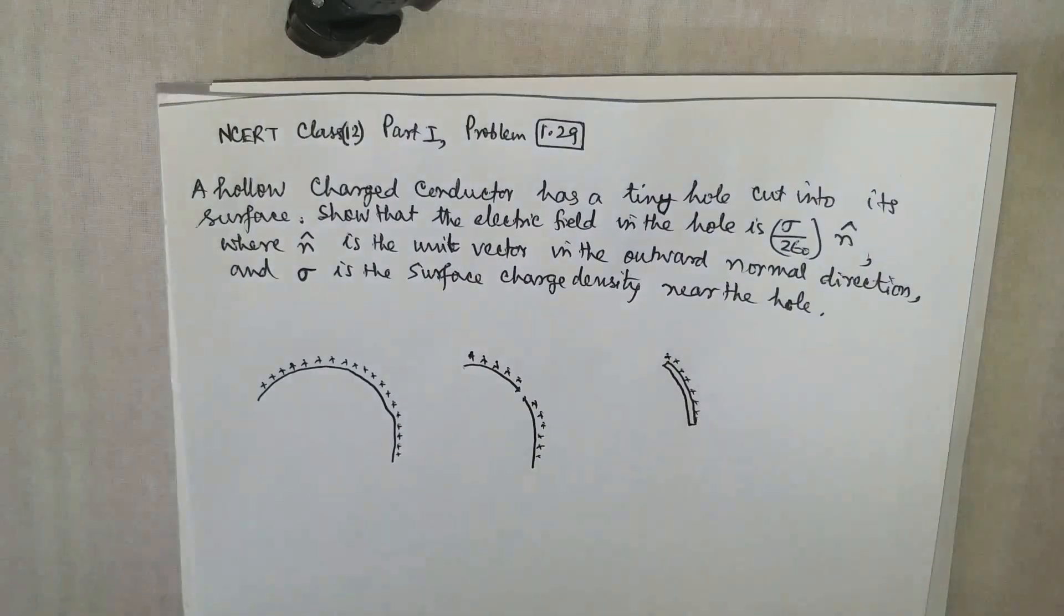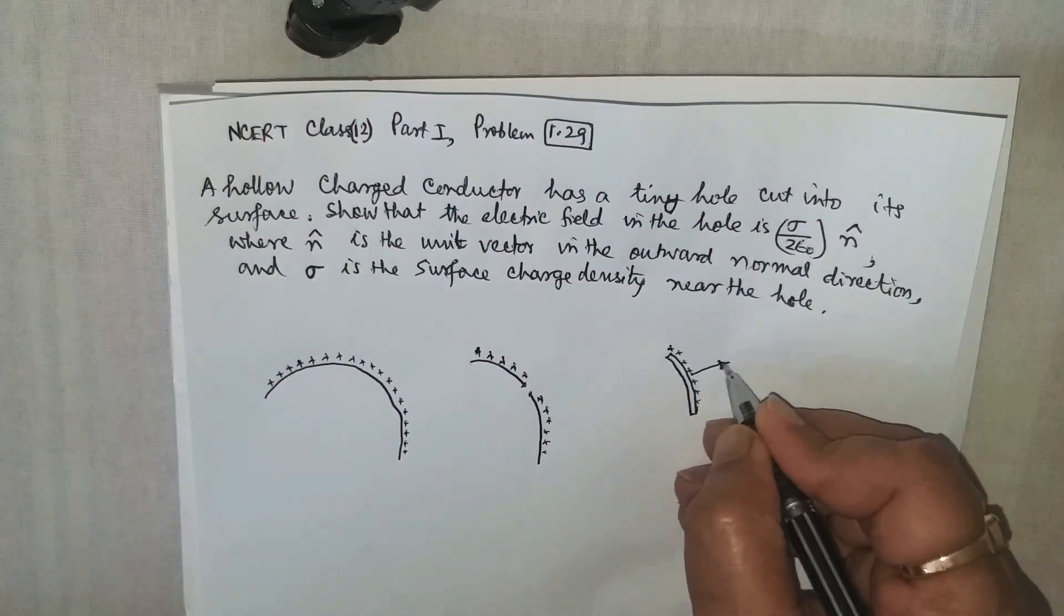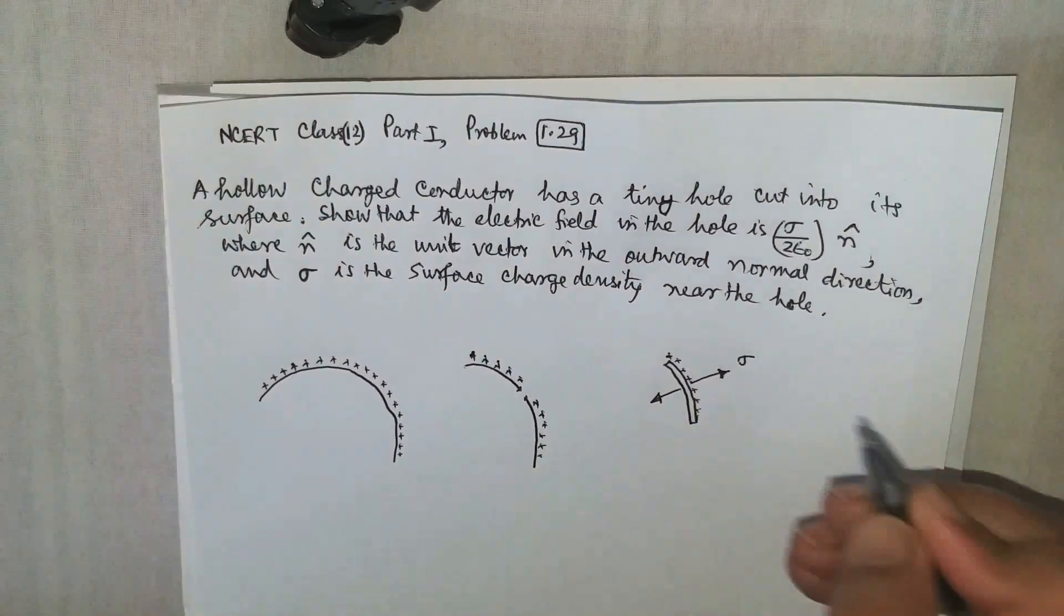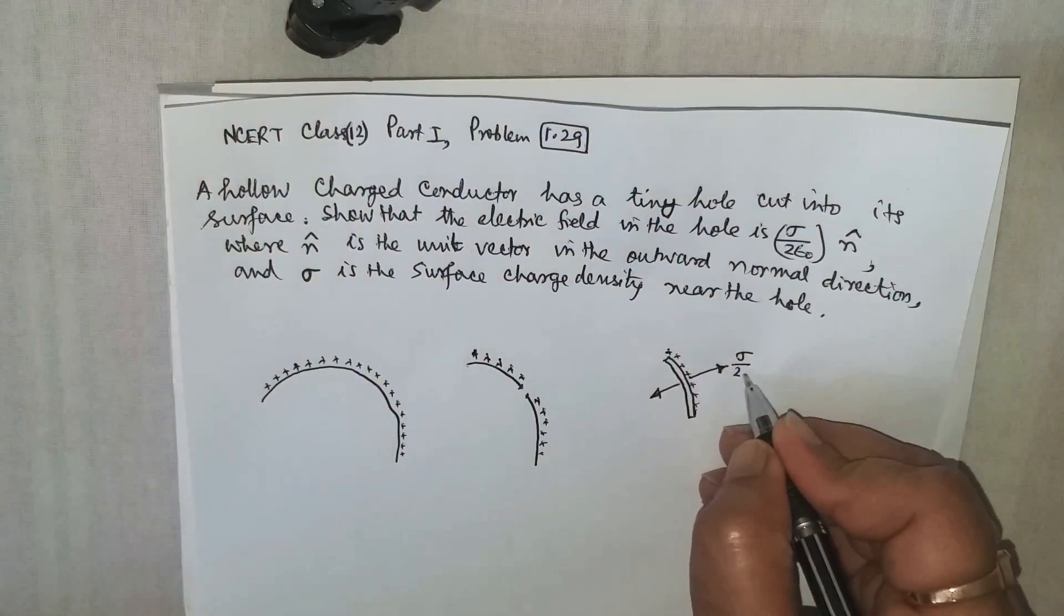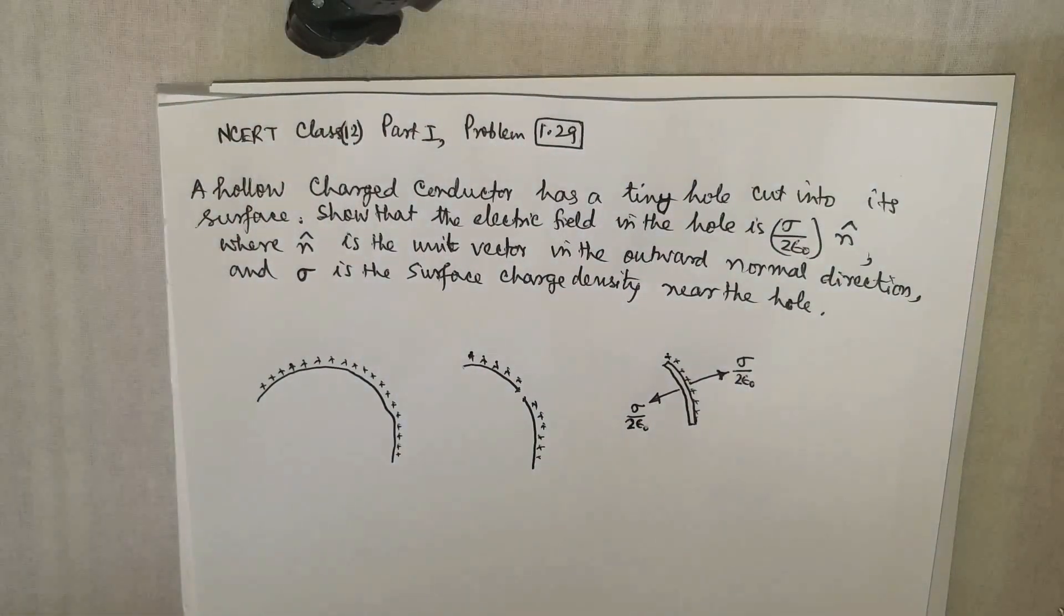We know that very near to a conductor at its surface, the field strength on either side will be equal to sigma divided by 2 epsilon naught. This side also sigma divided by 2 epsilon naught. This is the field strength.